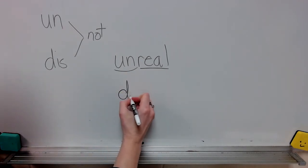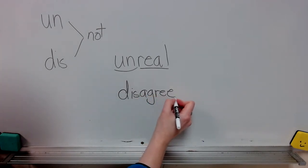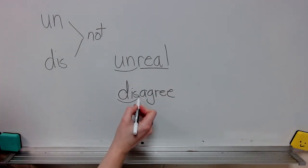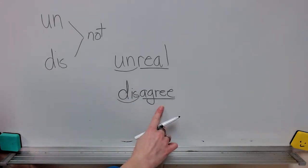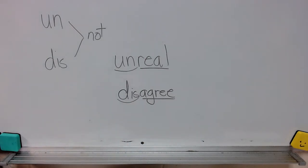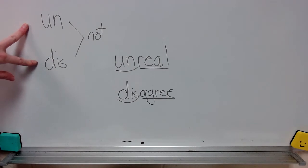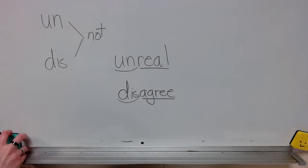Here's another word with the second prefix. I can see this prefix dis and I see the base word agree. When I add the meaning not to this base word agree, I know that this word disagree means to not agree. You can add un and dis to your anchor chart of our affixes. Remember, knowing the meanings of our affixes can help us know the meanings of and learn new words.